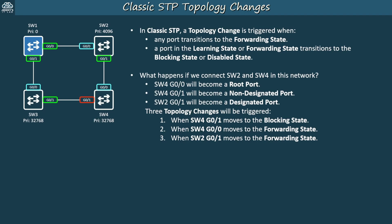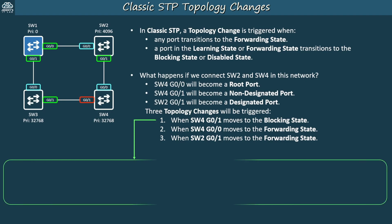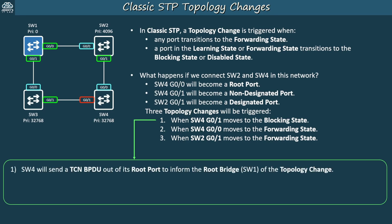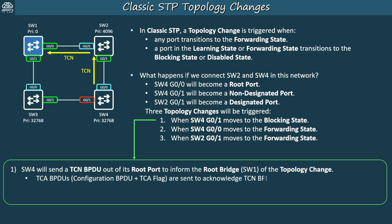What exactly happens when a topology change is triggered? It's a two-step process. Let's look at what happens when a topology change occurs on Switch4. First, Switch4 will send a topology change notification BPDU out of its root port to inform the root bridge — Switch1 — of the topology change. This will be passed along by Switch2. Topology change acknowledgement BPDUs, which are regular configuration BPDUs with the TCA flag set, are sent to acknowledge these TCN BPDUs. Switch2 sends one to Switch4, and Switch1 sends one to Switch2.